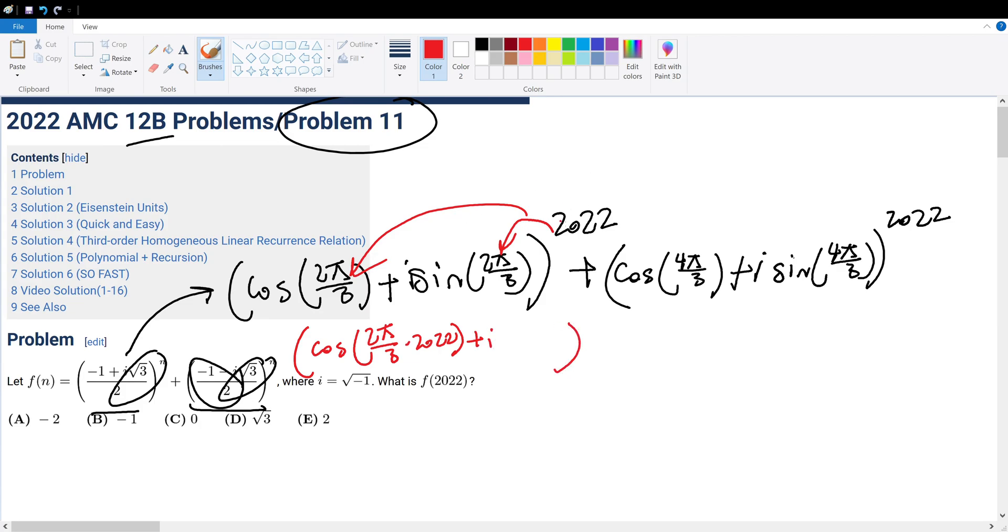But when we do 2022 divided by 3, we can realize it's a whole number, right? Because 2022, this adds up to 6, 2 plus 2 is 4, plus 2 is 6, so this is divisible by 3.